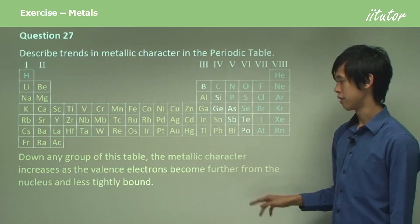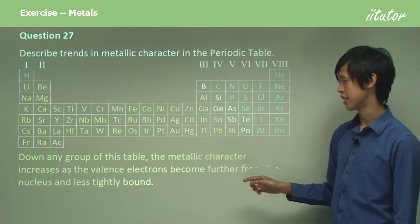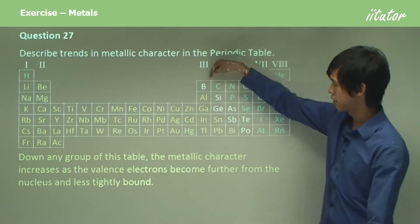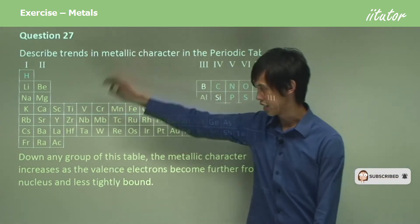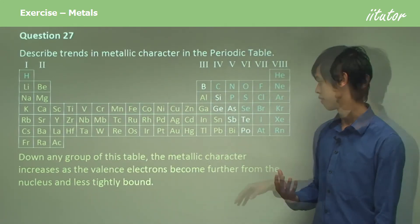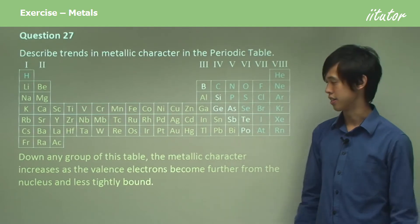Now down any group, the metallic character increases as the valence electrons become further from the nucleus and less tightly bound. So as you go downwards, down each group, the elements start to resemble metals more and more. So the metallic character increases.